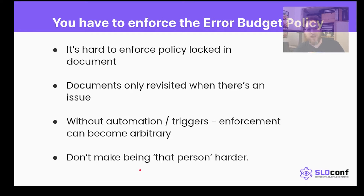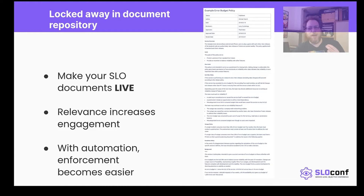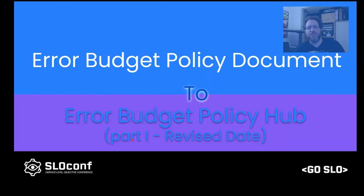People can choose not to enforce them or forget to enforce them, and there's no reason to make being the enforcer harder than it already is. These things are locked away in SharePoint, a wiki, or a Git repo. The goal is to take this boring — though very important — document and make it live. Increase its relevance by increasing engagement, and paired with automation, enforcement of the policies locked in these documents becomes easier.